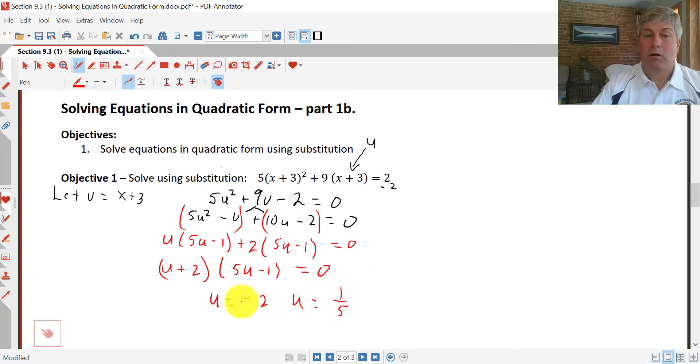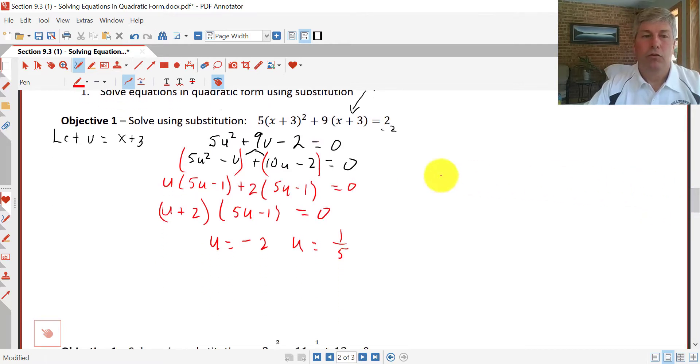But now remember, we don't want to solve for u. We are solving for x. So remember, u is x + 3. So we have to bring this back down and resurrect our x + 3. So we get x + 3 = -2, and x + 3 equals 1/5.